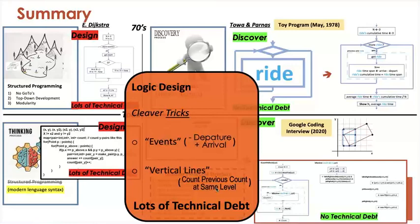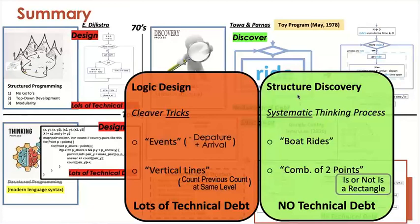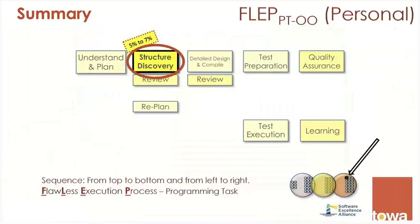On the right side, when you move to the Parnas idea, you focus on the structural discovery. It is a systematic thinking process. It is a systematic thinking process that you can train the people to think systematically, to be able to discover the structure. In the first example, we have a set of boat rides. In the second example, we have a set of combinations of two points. And every combination of two points is or is not a rectangle. And the result is no technical debt.